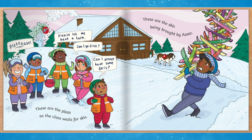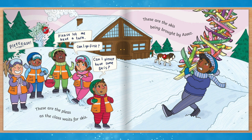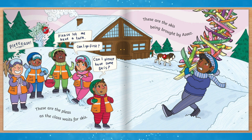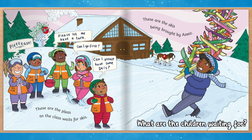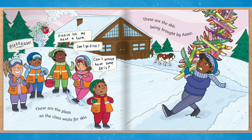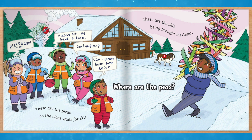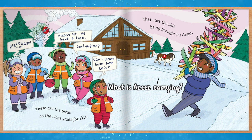Please, please let me have a turn. Can I go first? Can I please have some skis? These are the pleas as the class waits for skis. These are the skis being brought by Aziz. What do you think the children are waiting for? Can you see the peas in this picture? What is Aziz carrying?